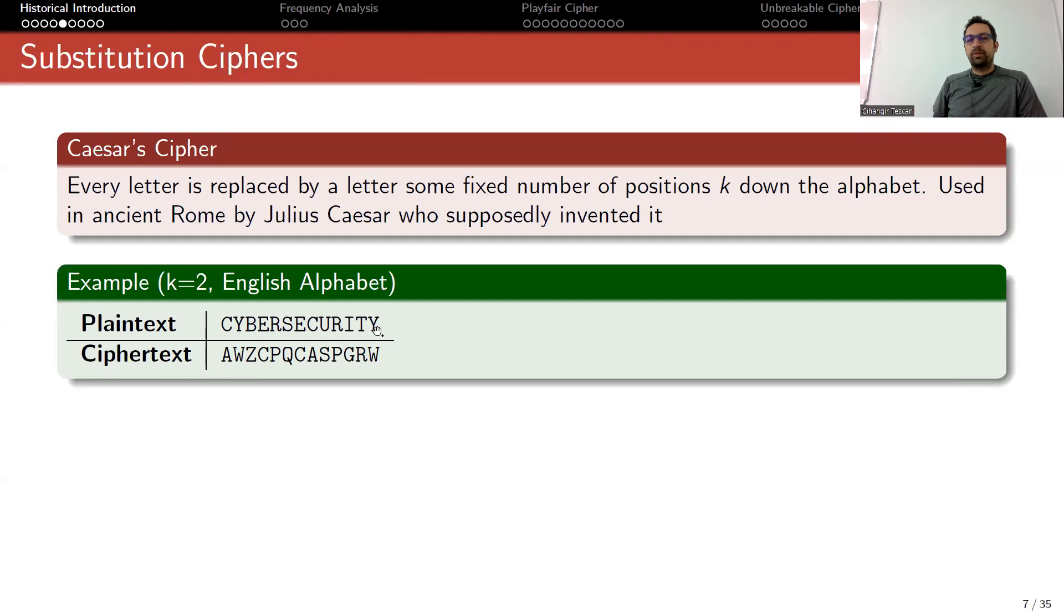Let me give you a basic example. Assume my plaintext is 'cyber security' - I don't put any empty spaces or punctuation marks. I choose k equals to 2. I write the alphabets and whenever I see a letter, I replace it with two down the alphabet in a cyclic manner. For instance, if you want to encrypt 'b', you go one down to 'a', then one more down you go to the end of the alphabet and replace it with 'z'. When the person receives the ciphertext, they know the secret key is two, so they increase the letters in the alphabet by two.